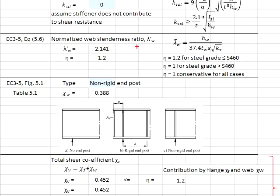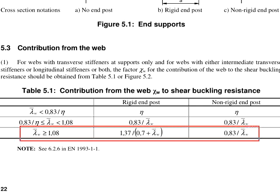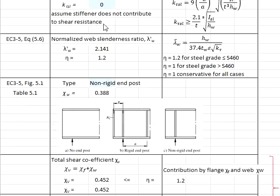In this case, we found that lambda prime w is equal to 2.14. By referring to table 5.1, 2.14 is in this category and it is considered as a non-rigid end post. Therefore, chi_w will be equal to this. This gives you chi_w equals to 0.388.